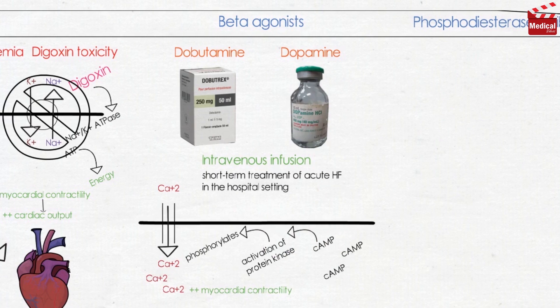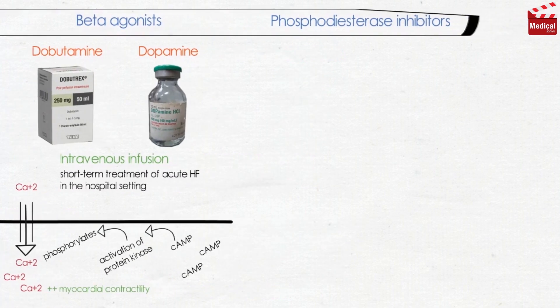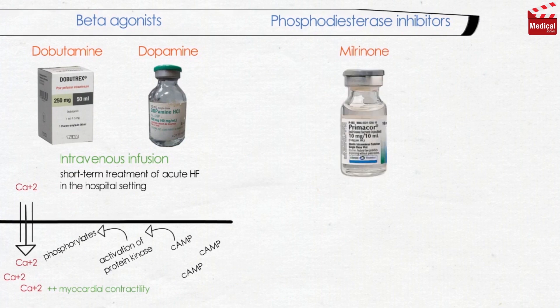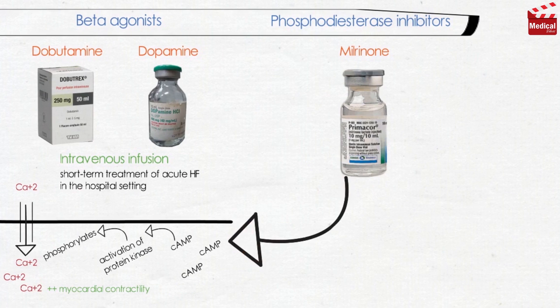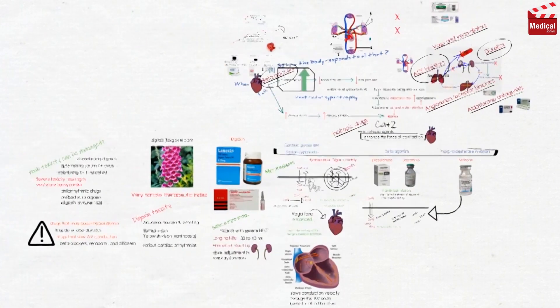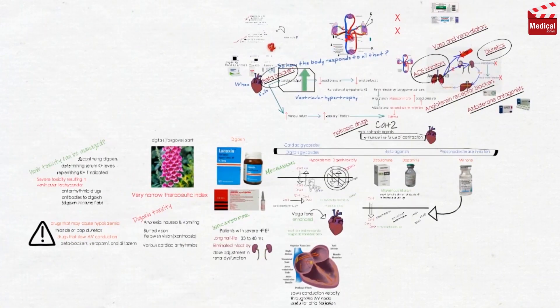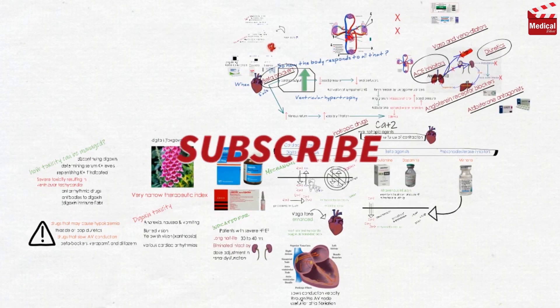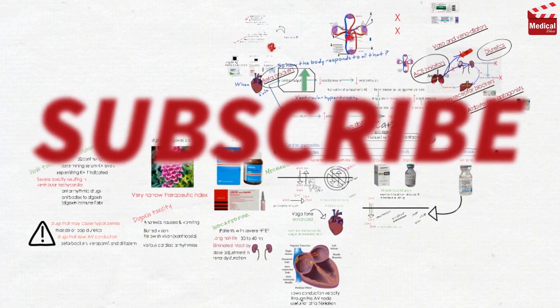The last group is phosphodiesterase inhibitors, such as milrinone. Like beta-adrenergic agonists, it increases the intracellular concentration of cAMP, which results in an increase of intracellular calcium and therefore cardiac contractility. That's all for now about heart failure. In the next lecture we'll start talking about cardiac arrhythmias, so subscribe and wait for the upcoming videos.